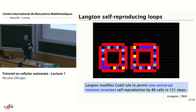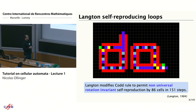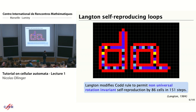Now you have a self-reproducing machine with only 86 cells and you just need 151 steps to do a full reproduction step. So, why do I show you this? It's because of the next slide: I've talked about self-reproduction, but what is the definition of a self-reproducing machine?